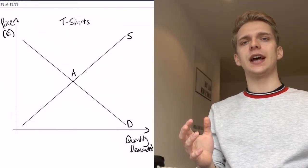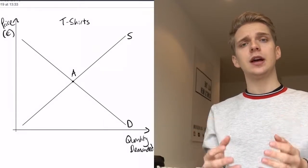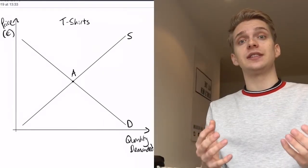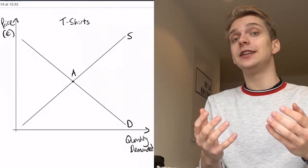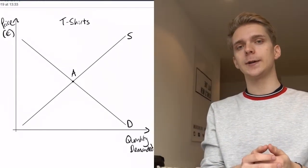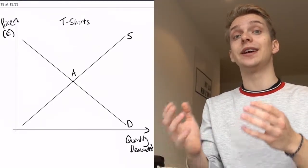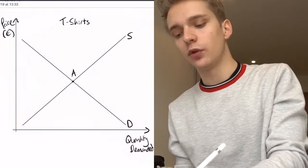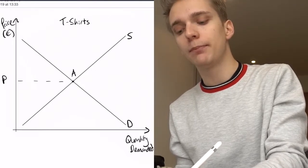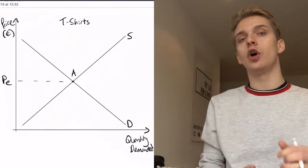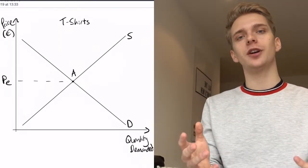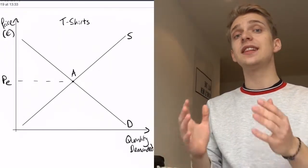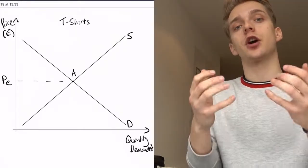What's interesting about point A? Well, supply shows the amount of t-shirts produced — how many t-shirts are produced in this market. The demand curve shows how many t-shirts are bought in this market. So at point A, the quantity supplied and the quantity demanded are equivalent. It means that at that specific price level — we'll call that PE for equilibrium price — all the t-shirts that are produced are going to be sold. So we say that the market clears, or the market is in equilibrium.